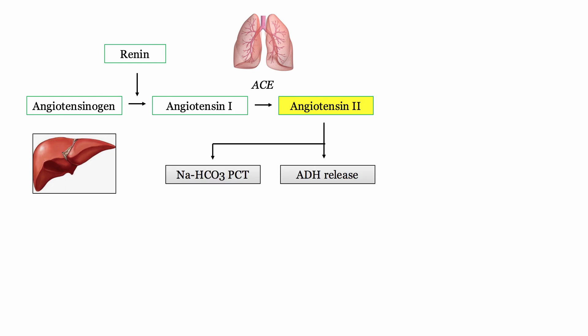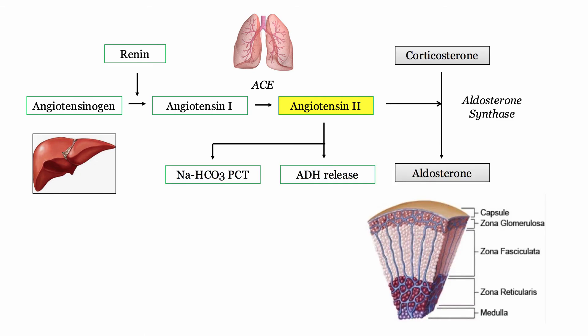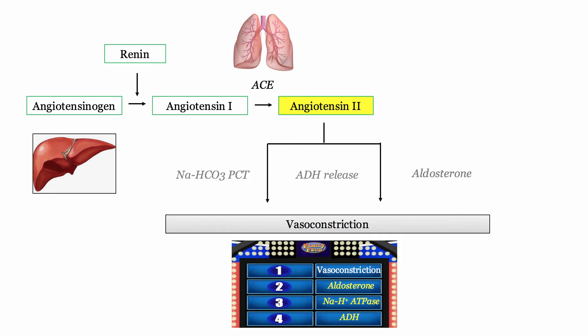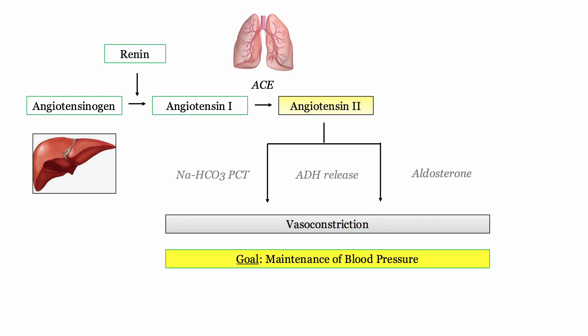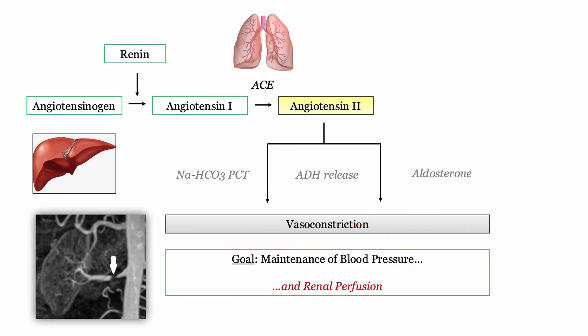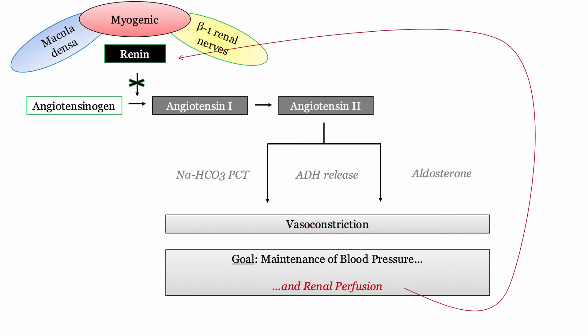Unlike renin, angiotensin II is a big shot — it gets things done. Angiotensin II stimulates absorption of sodium and bicarbonate in the proximal convoluted tubule, and it stimulates ADH release from the posterior pituitary. Through stimulation of aldosterone synthase in the adrenal glomerulosa, it facilitates the conversion of corticosterone to aldosterone. But its number one and most immediate impact on blood pressure regulation is direct vasoconstriction of vascular smooth muscle. When arterial hypoperfusion is present, renin stimulates this cascade to restore blood pressure, arterial perfusion, and renal perfusion. When renal perfusion is restored, renin release is inhibited until the next cycle.